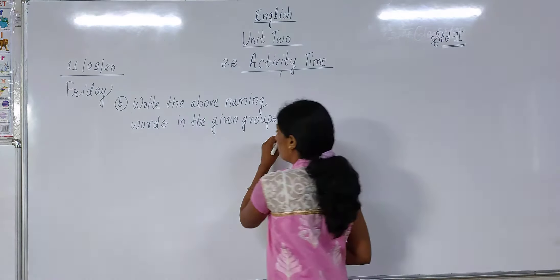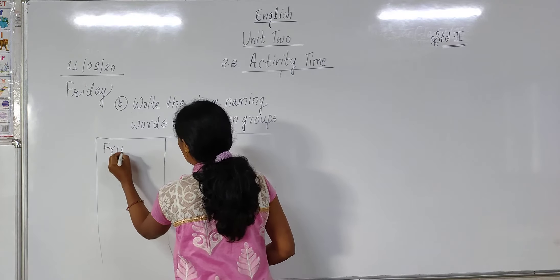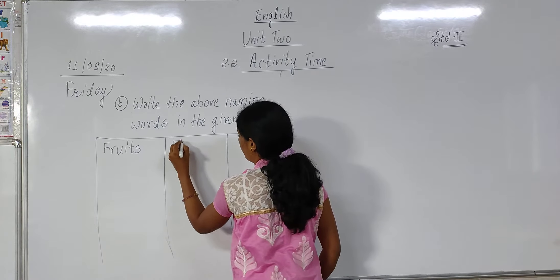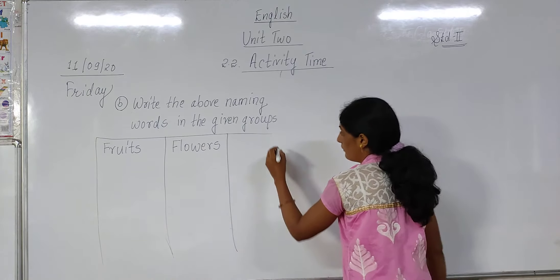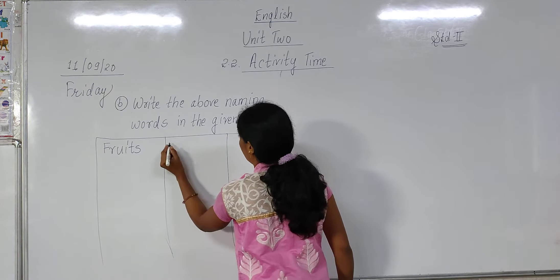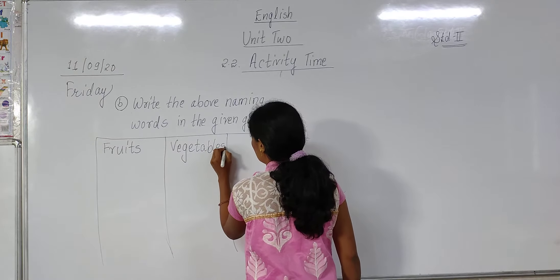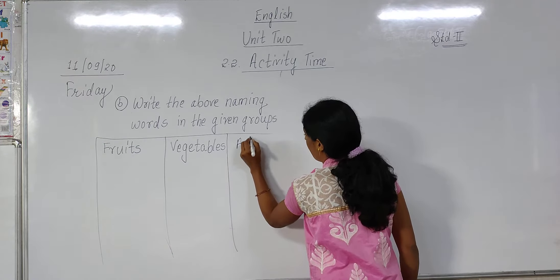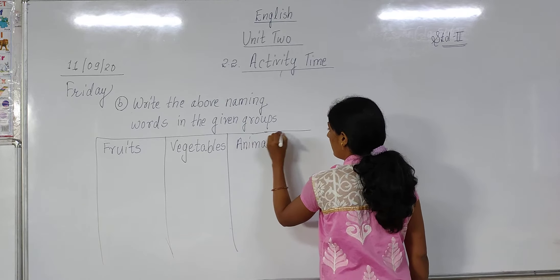First group we will make of fruits, second group will be of vegetables — as given in your book — third group is of animals, and fourth group is of flowers. We are going to divide the words according to their column.